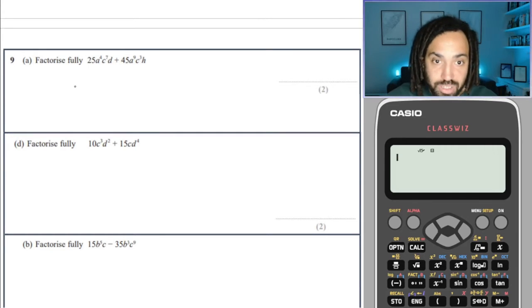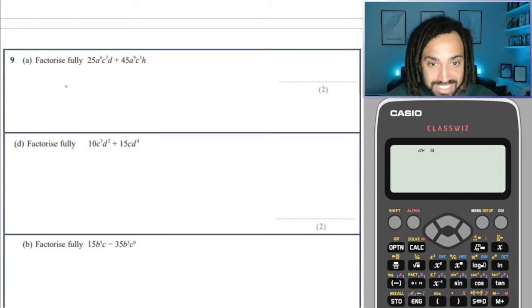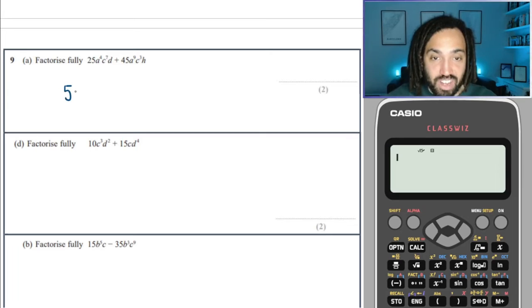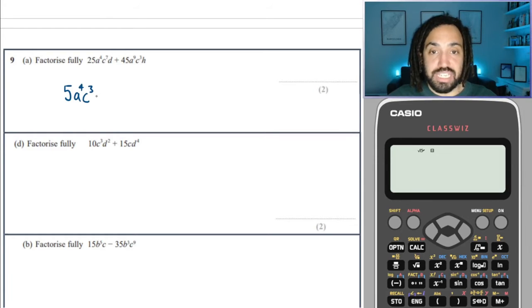Okay, right. You've got to be careful with these ones. Very fiddly. Five is the highest factor. A to the four is the highest A. C to the three is the highest C.